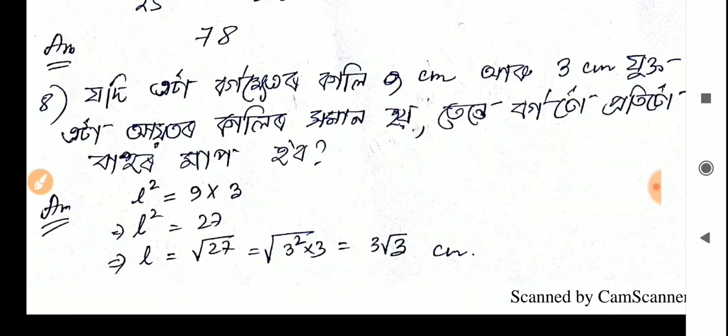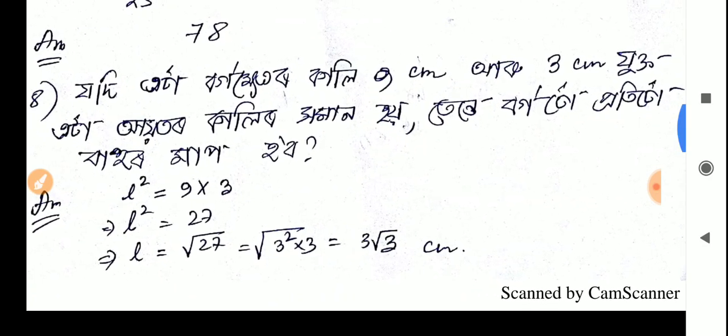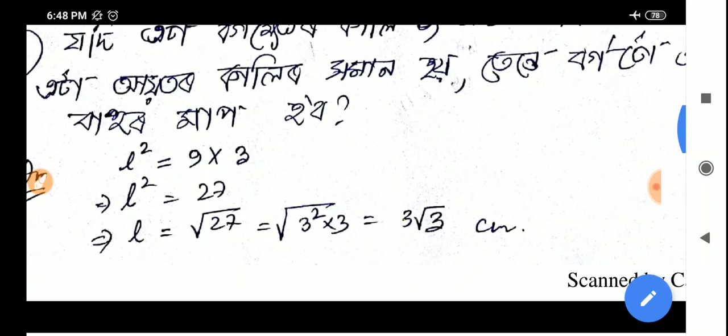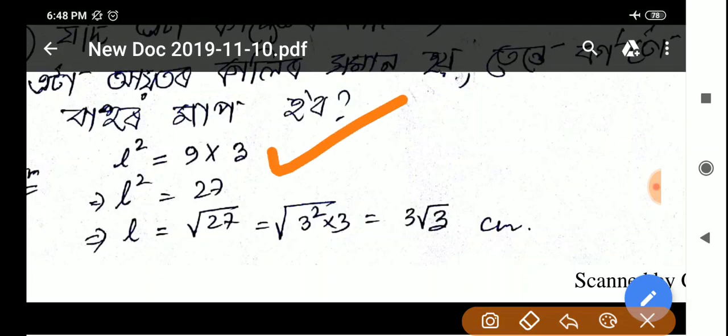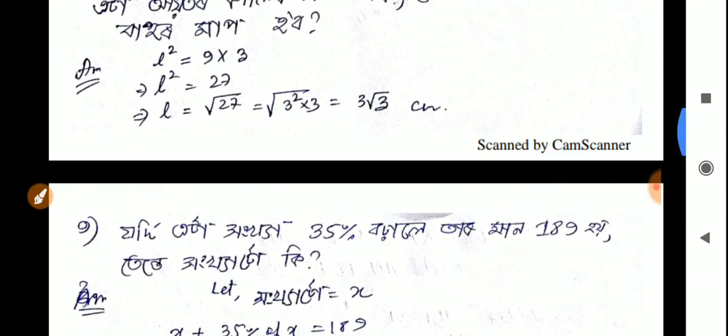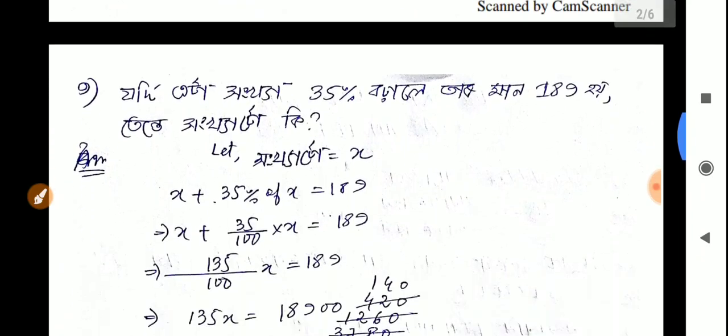So if a square area has side 9 cm and another square's side is 3 cm, what would be the side length of a square whose area equals the sum of these two squares? This is a direct formula application. L squared equals 9 into 3, which equals 27. So L equals root 27, which simplifies to 3 root 3. So this is the correct answer and you can get full marks for this.